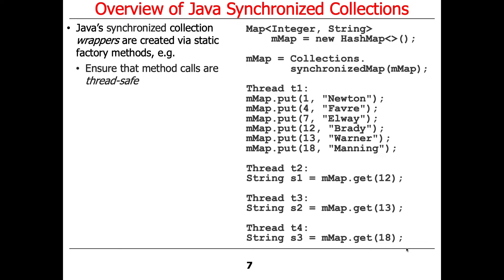These factory methods ensure that the result that comes back is, in fact, thread-safe. Let's take a look at a simple example — it's really kind of clever, not necessarily the best thing to do, but it's very clever.